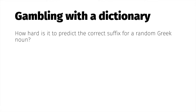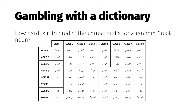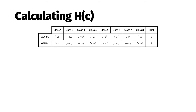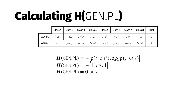Let's return to our Greek data and extend the gambling metaphor. Imagine you have to open a Greek dictionary to a random page, slam your finger down without looking, and predict the correct inflectional suffix for the noun you've selected. The difficulty associated with this task is the paradigm cell entropy, or H(C). Let's calculate the entropy of the accusative plural and genitive plural suffix. Guessing the genitive plural suffix is clearly the easier task — all Greek nouns in this form bear /on/ — and indeed, the entropy of the Greek genitive plural paradigm cell is zero bits.